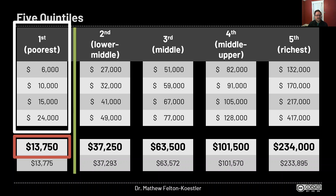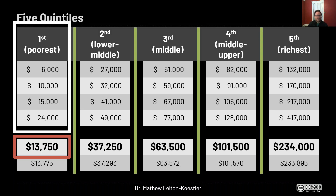The U.S. Census tells me the cutoff — the boundary between each group — so I made up numbers that would both match that average and fit within the boundaries. I also want to point out that the four hundred seventeen thousand dollar value is in the top quintile; since it's one out of twenty households it represents the top five percent, and that number is very close to the actual value the U.S. Census gives for the richest five percent of households.